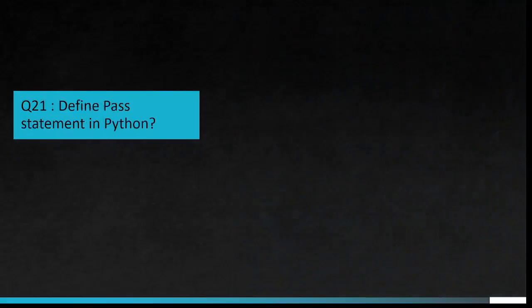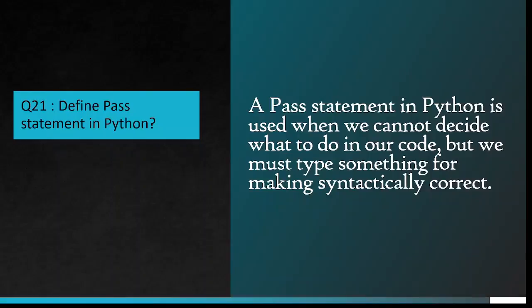Pythoncaseok environment variable is applied in Windows with the purpose to direct Python to find the first case insensitive match in an import statement. Question number 21: Define pass statement in Python. A pass statement in Python is used when we cannot decide what to do in our code, but we must type something for making syntactically correct.